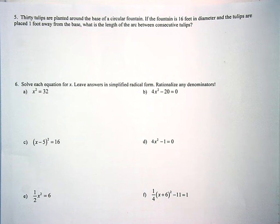And I think part of the misunderstanding is just in the details of the problem. So first up, 30 tulips are planted around the base of a circular fountain. If the fountain is 16 feet in diameter and the tulips are placed one foot away from the base, what is the length of the arc between the consecutive tulips?